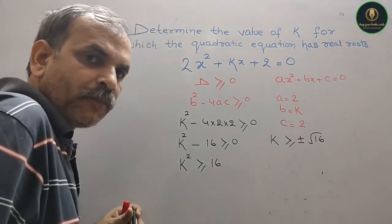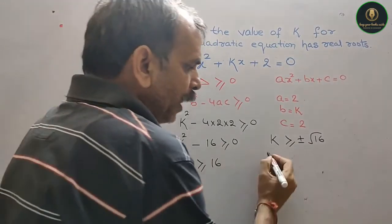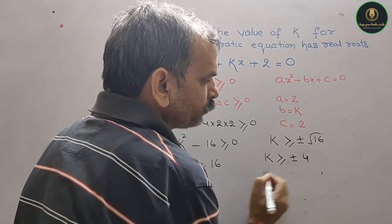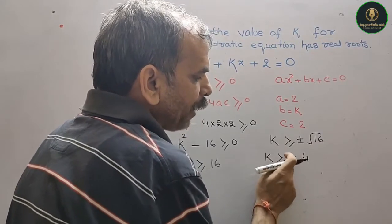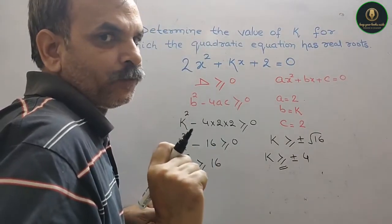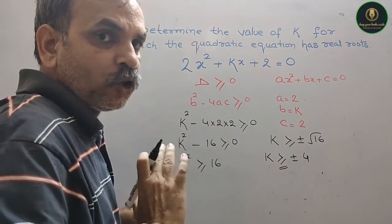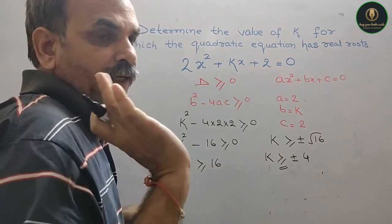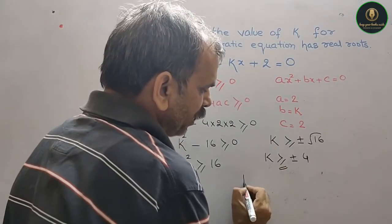Okay? Now, k is greater than equal to plus minus 4. Now, since we have plus minus here, we'll take plus once and minus once. With plus there is no change of sign. With minus there is change of sign. So your values will come as follows.